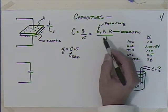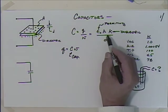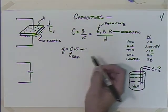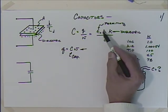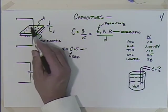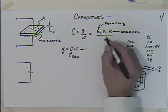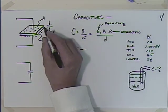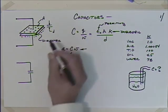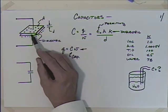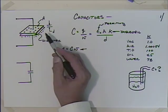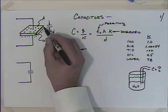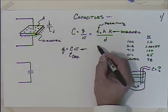The area of the plates is important — the larger the plates, the larger the capacitance. Also, the closer the plates are together, the higher the capacitance. However, as the dielectric gets thinner and thinner, you can start to have dielectric breakdown, which can be a problem. But as we get them thinner, we can increase the capacitance value.